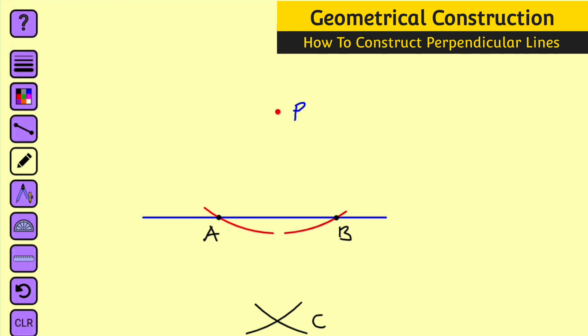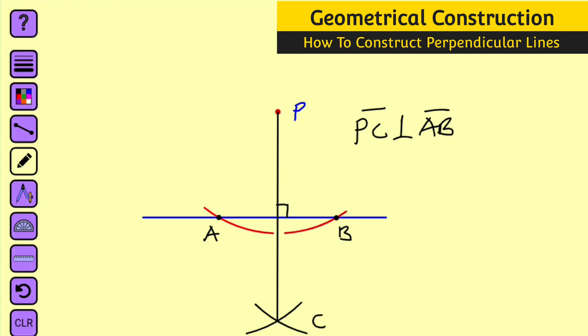Now use your ruler to connect point C and point P together. So what you can see here is 90 degrees, and hence we conclude by saying that line PC is perpendicular to line AB. This is how to construct perpendicular lines. Thank you for watching — do have a nice day.